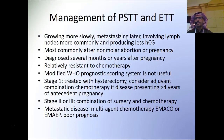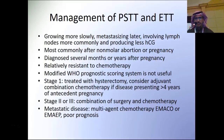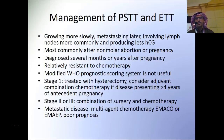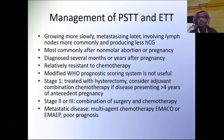Placental site trophoblastic tumor and epithelioid trophoblastic tumor are characterized by slower growth, later metastasis, more frequent lymph node involvement, and low beta-HCG levels. They most commonly occur after non-molar abortion or pregnancy, are diagnosed several months or years after pregnancy, and are relatively resistant to chemotherapy. The modified WHO prognostic scoring is not useful for these tumors. Stage 1 is treated with hysterectomy, with adjuvant combination chemotherapy if presenting more than four years after antecedent pregnancy. Stage 2 or 3 requires combined surgery and chemotherapy. Metastatic disease is treated with EMA-CO or EMA-EP.